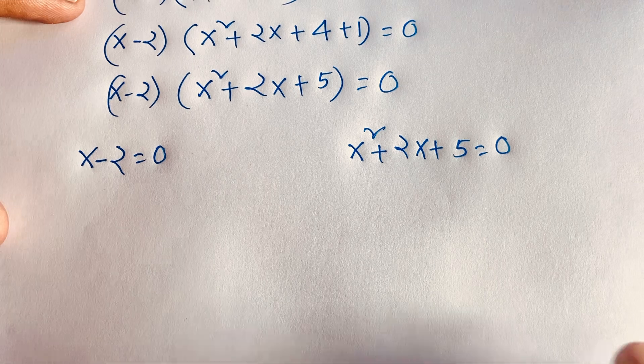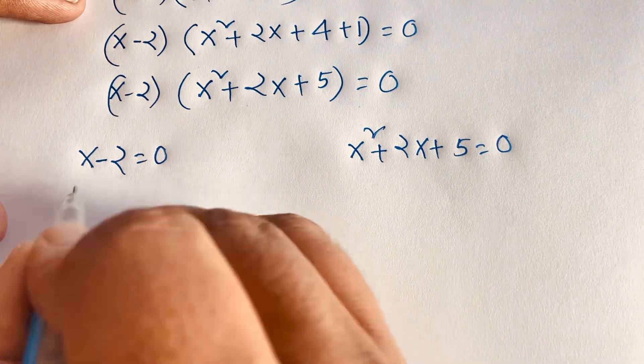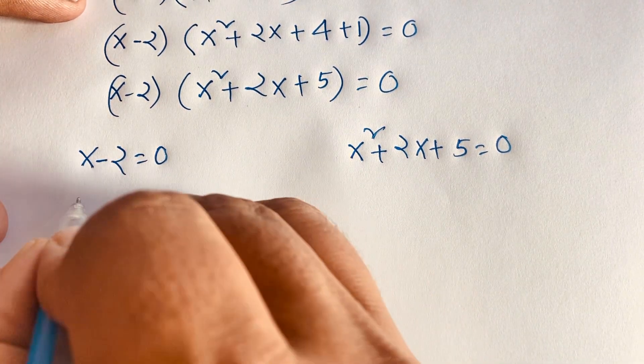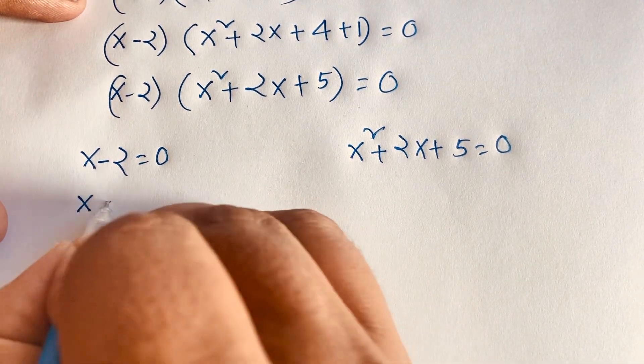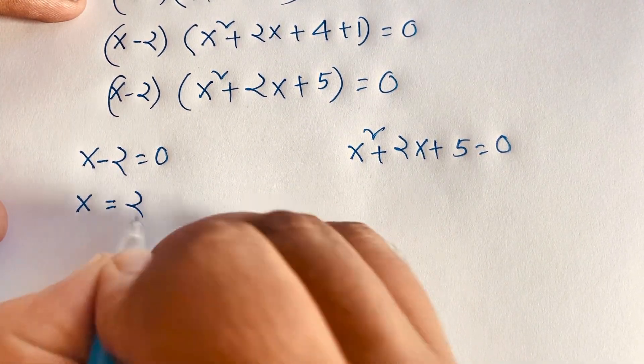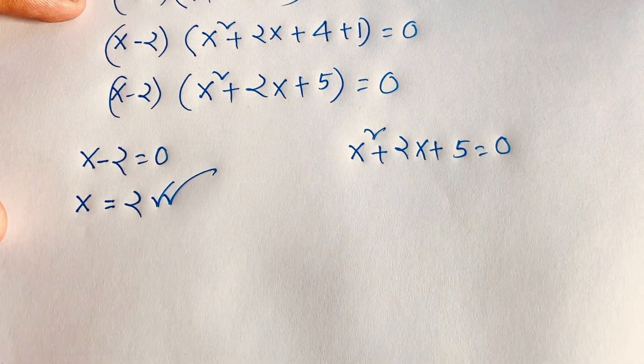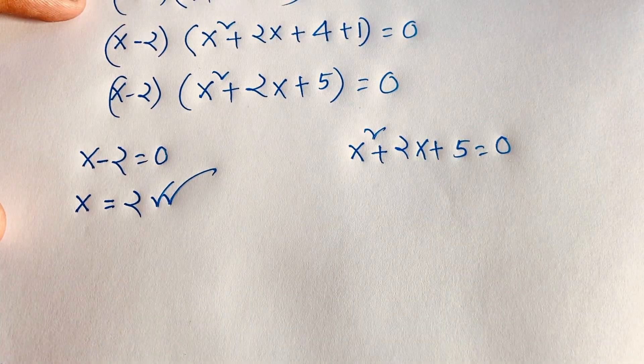So I can say here is x minus 2 is equal to 0. If I add 2 to both sides, I can say x is equal to 2. So we'll find out our final answer: x is equal to 2.